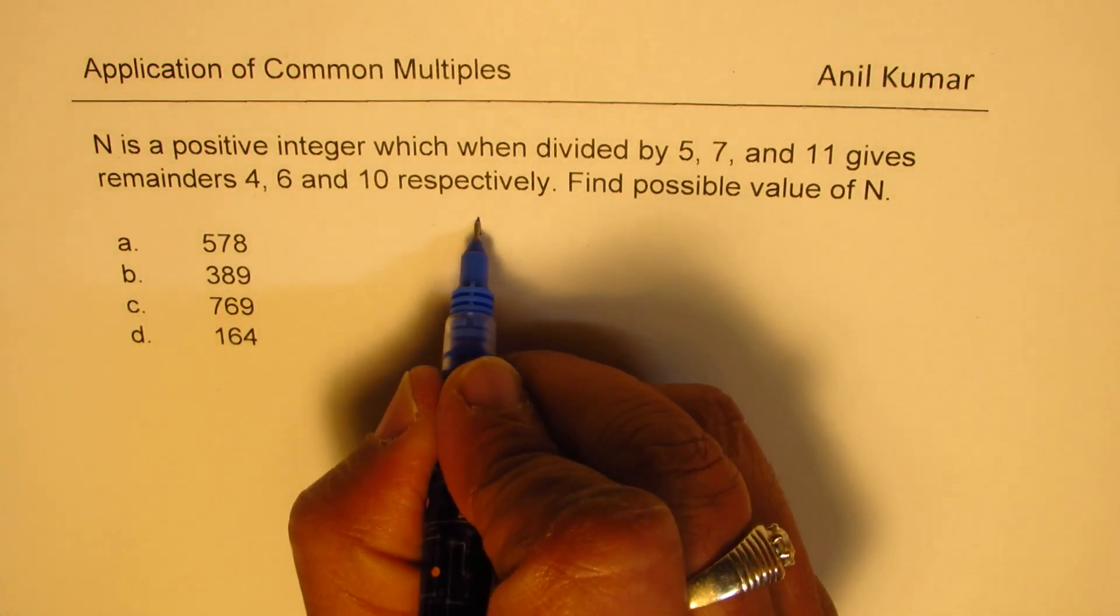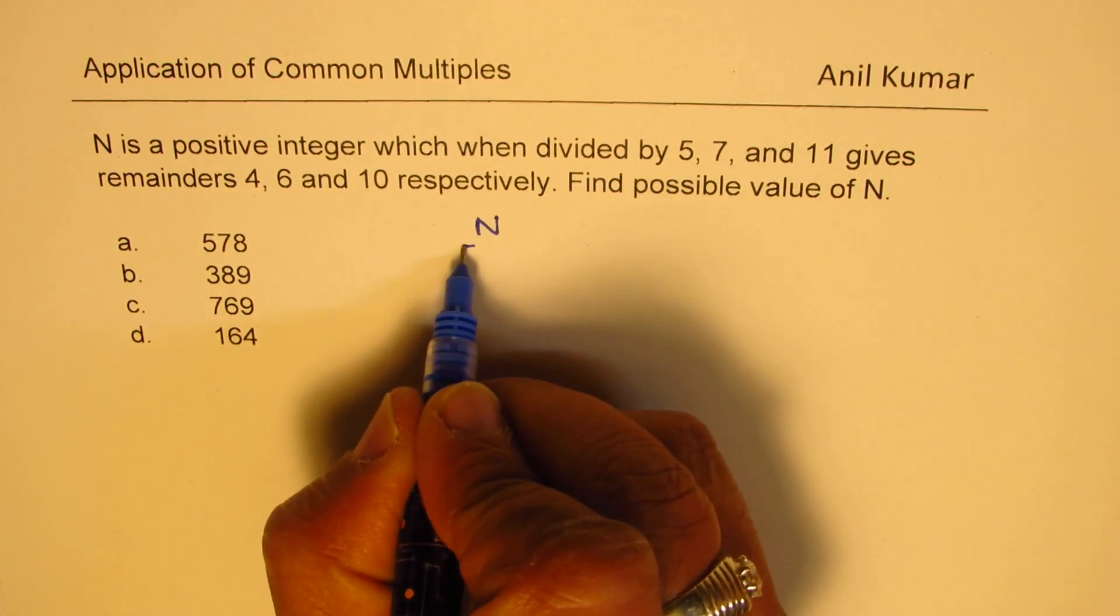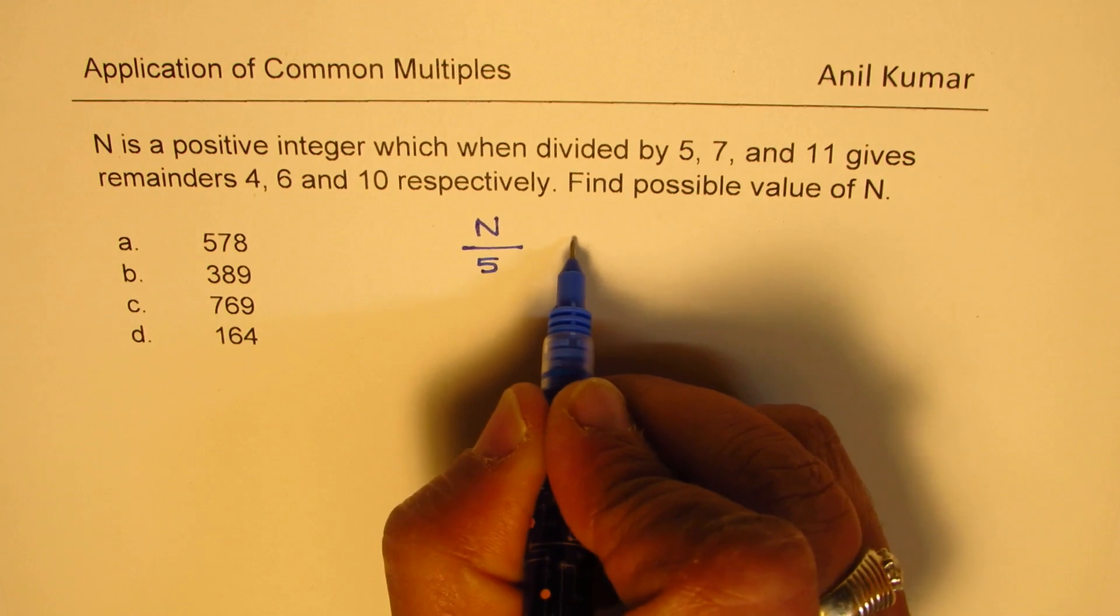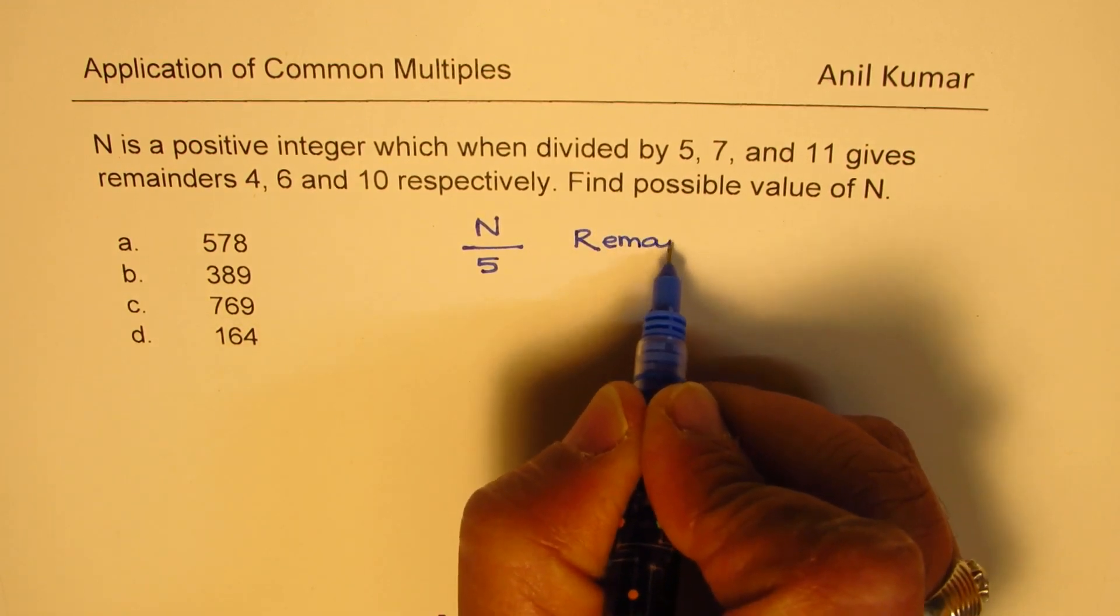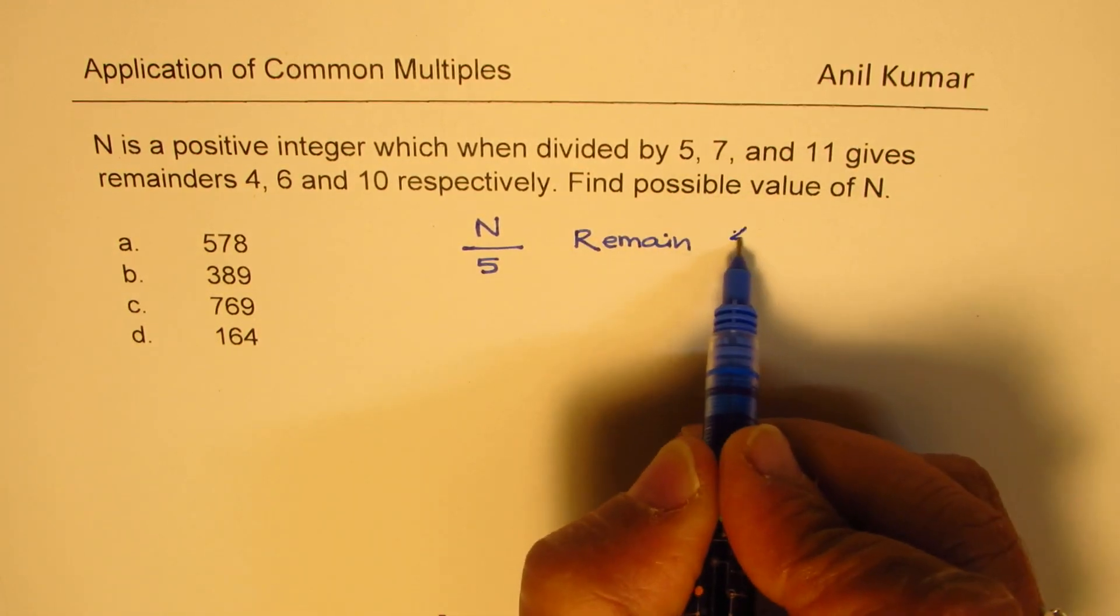So, N is a positive integer, and when we divide N by 5, then what we get is a remainder which is 4.